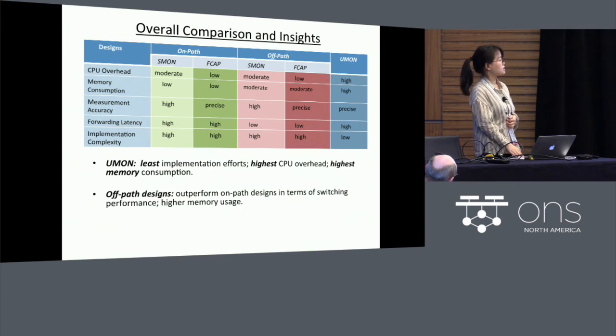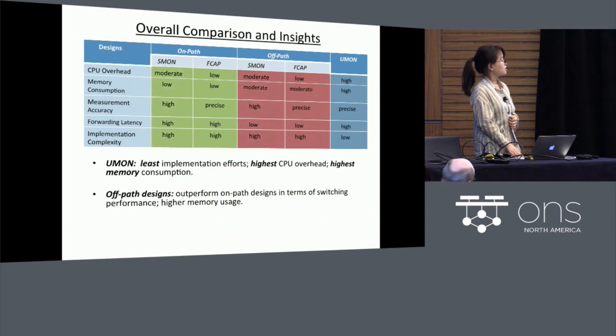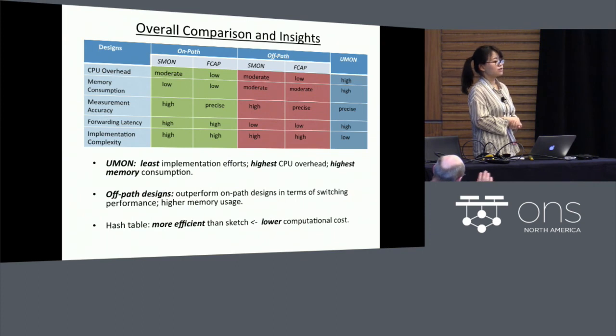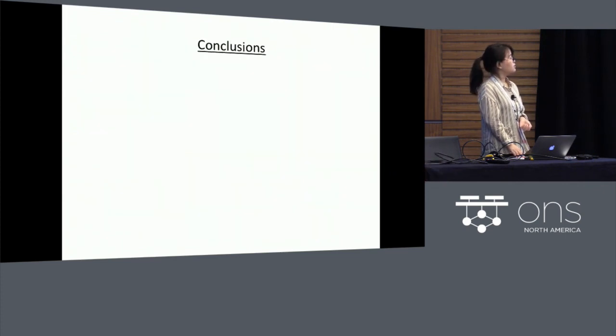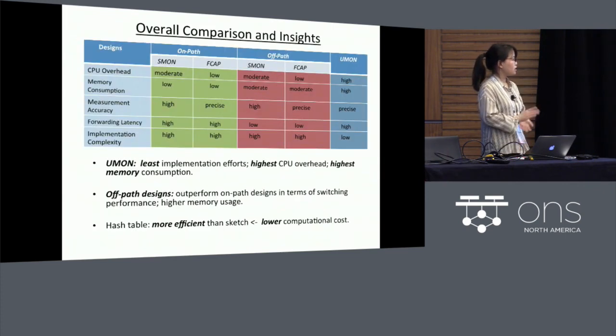But it requires, with acceptable memory usage. And the hash table is more efficient than sketch, due to its lower computational cost. Based on the above discussions, we know that the off-path FCAP gives the best performance, in terms of both the resource consumption, as well as the switching performance.